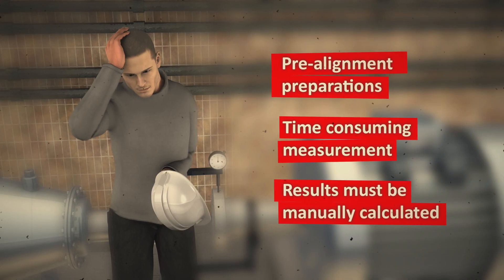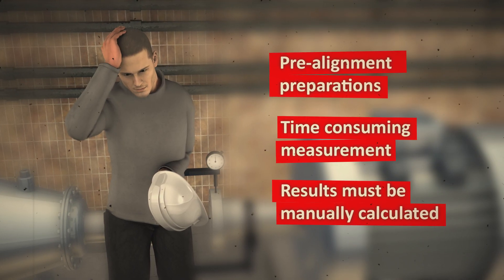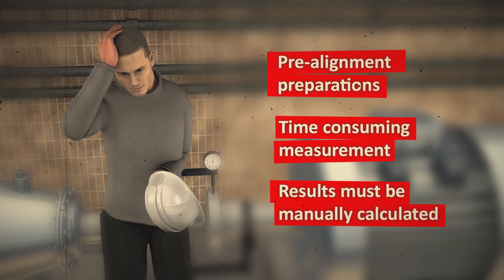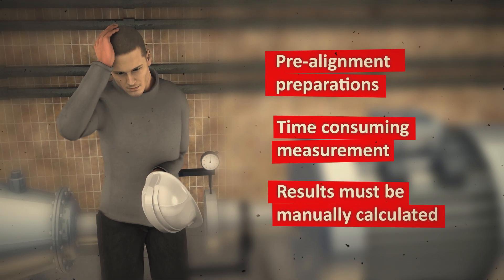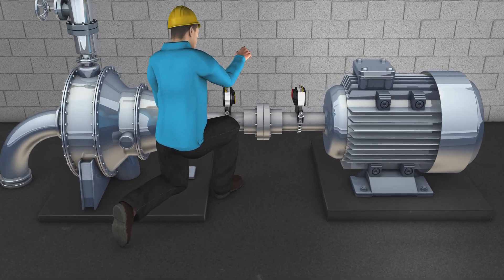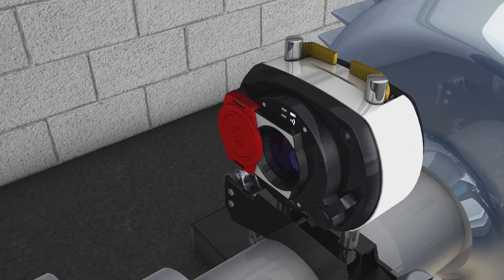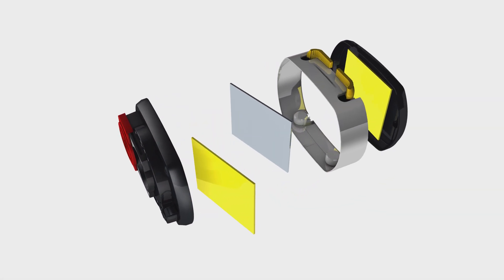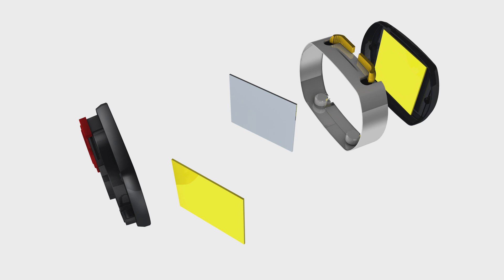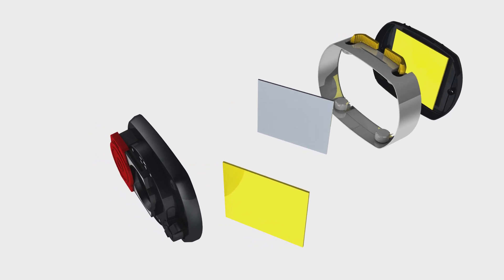Pruftechnik made all this redundant with its unique SensALIGN laser sensor technology. As we just said, measuring angularity and offset always takes at least two measurements. The SensALIGN technology does it all within one single measurement. The single laser beam is shot into the sensor center where it is focused and minimized by an optical lens.